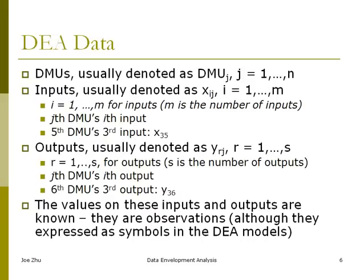So now let's look at what kind of information do we need in a DEA model, which I call the data. First thing, of course, you need the DMUs. This usually is denoted as DMU_j, j from 1 to n. So if you have 15 companies or 15 DMUs, then n is going to be equal to 15. And then you will need to have a set of inputs. X_ij, i goes from 1 to m.